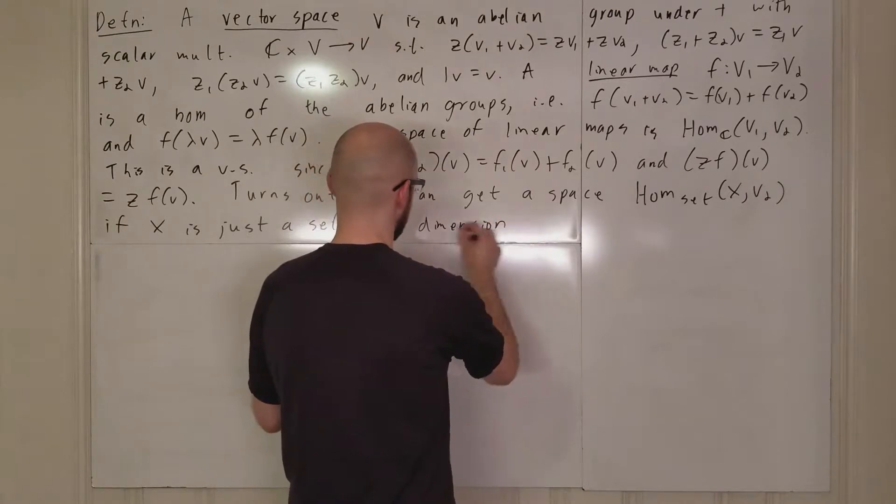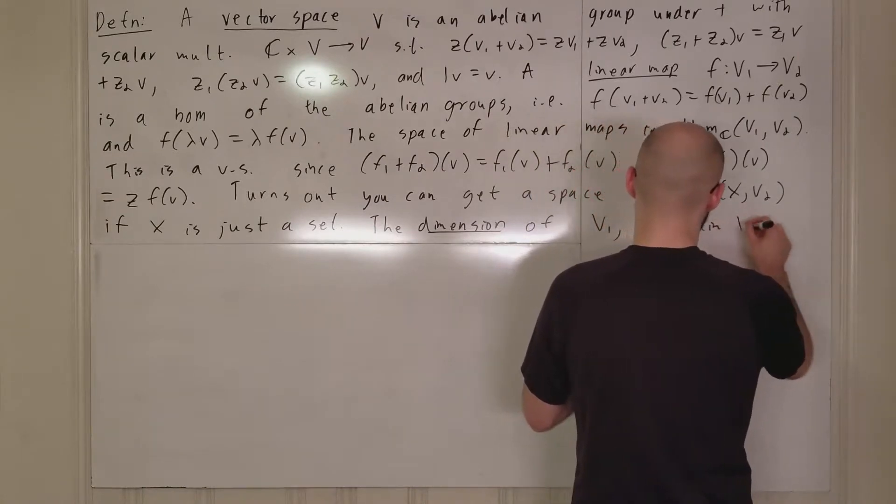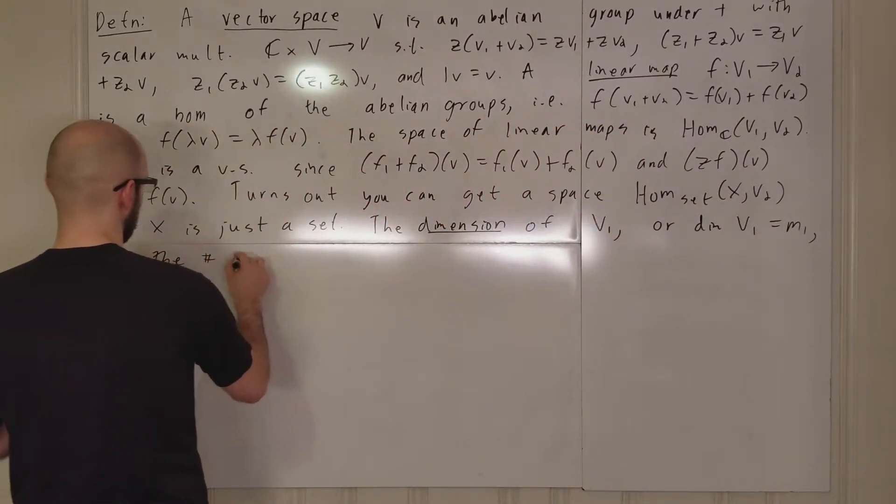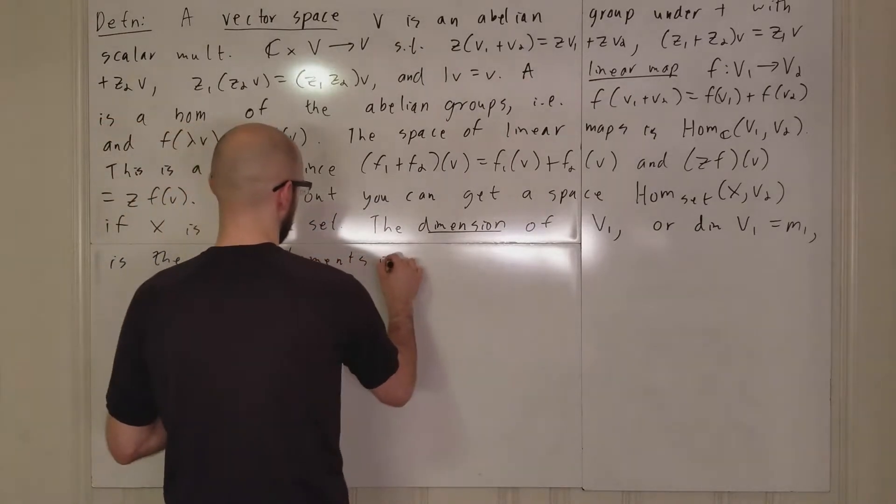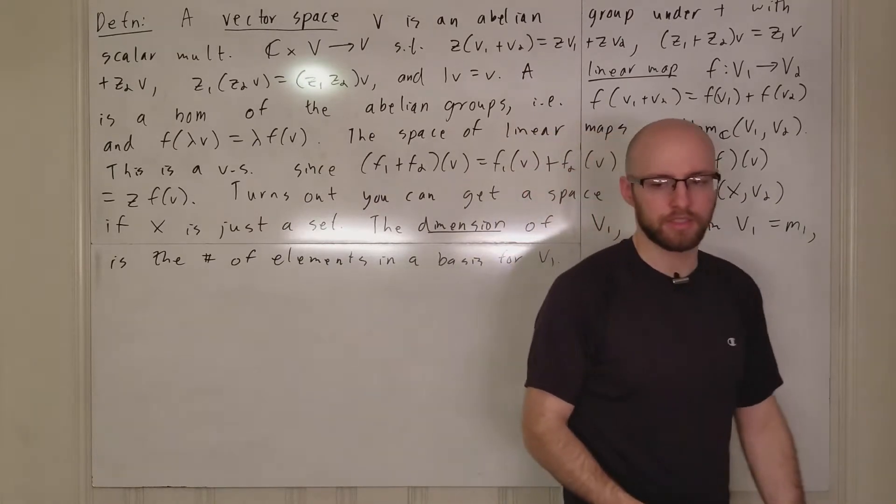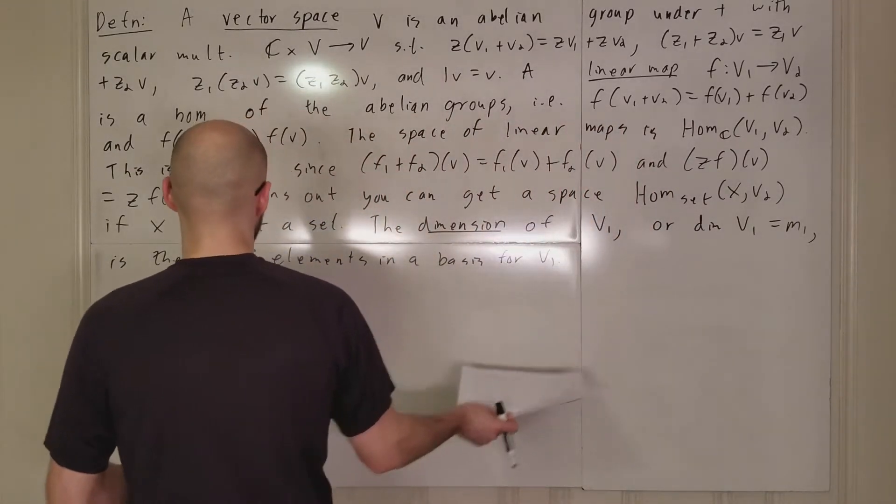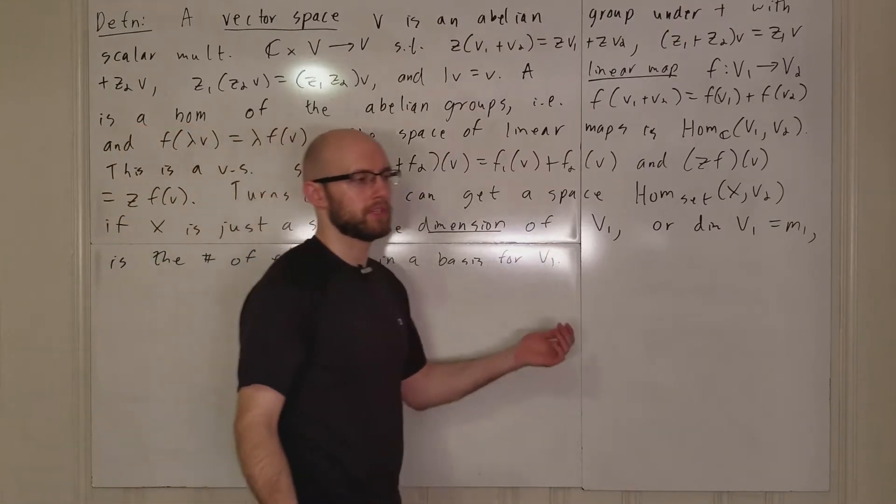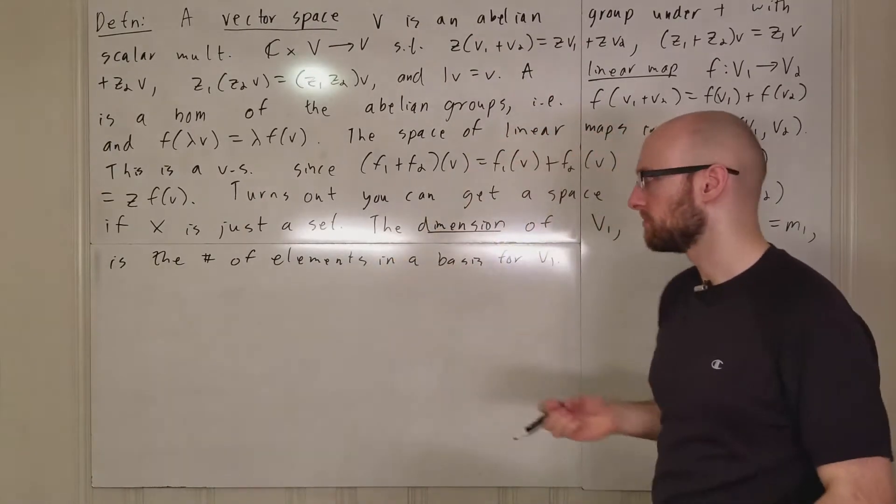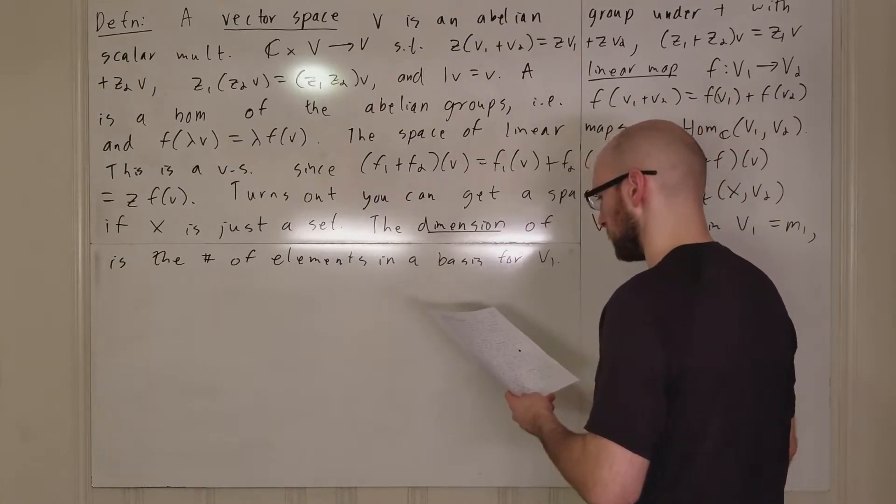The dimension of V1, or dim V1, which we will set as m1, is the number of elements in a basis for V1. We're only going to be talking about finite dimensional vector spaces. I know that makes it a little boring, but you got to start somewhere I guess. Every vector space has a basis, and if it's finite dimensional then that dimension is unique. We're not going to prove that. That's some of the more fundamental material in linear algebra, so we'll just assume that you know that.